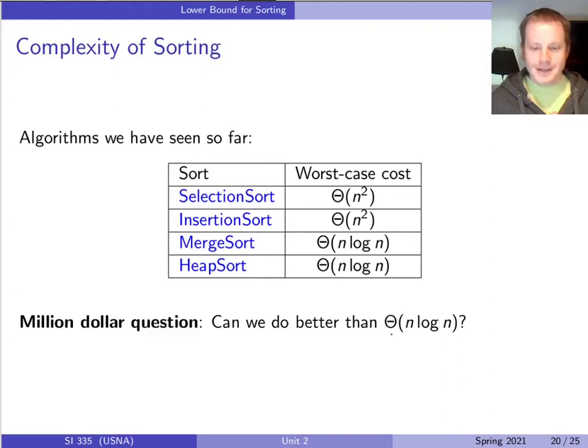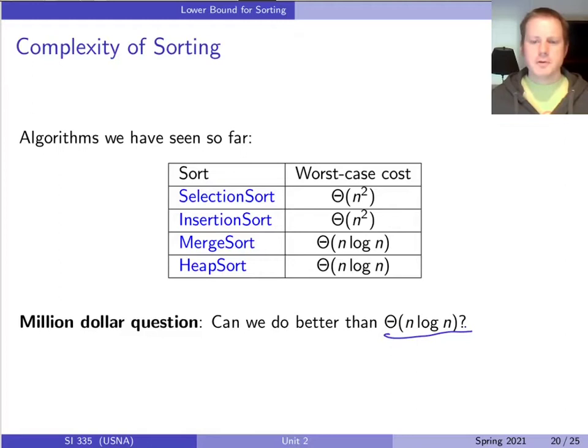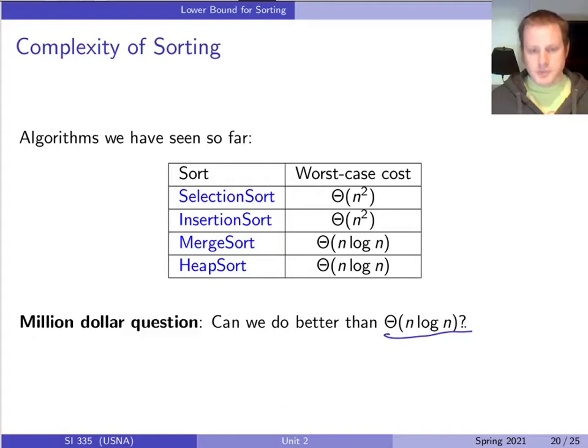Now the question — this isn't exactly a million dollar question, but it's a question we want to ask — is: is anything better than n log n possible? Should we keep looking for better sorting algorithms? If you were to learn about other sorting algorithms, like quick sort or a few others, you would see that the best ones are consistently n log n time. Is this really the limit, or do we need to keep working to get a better sorting algorithm? That has to do with a lower bound for the problem.